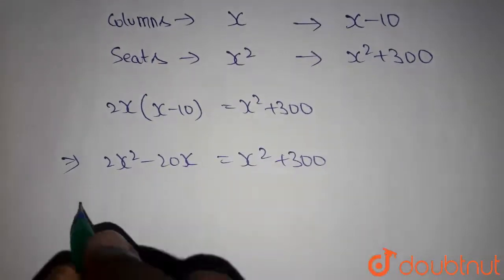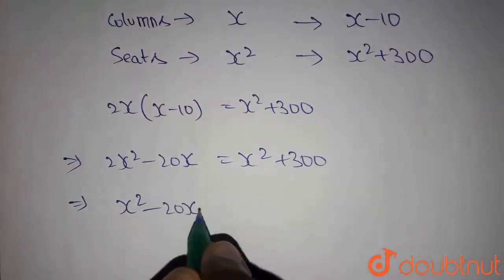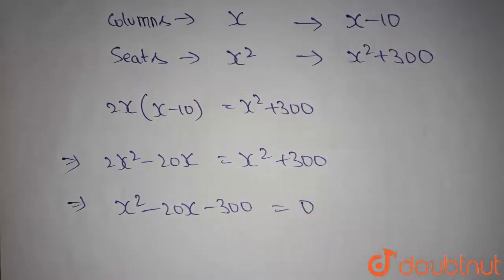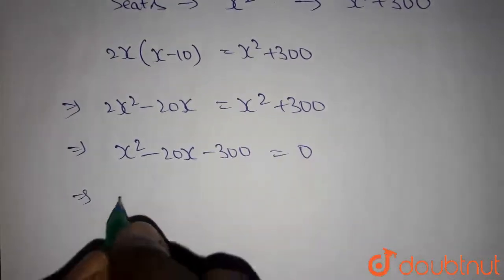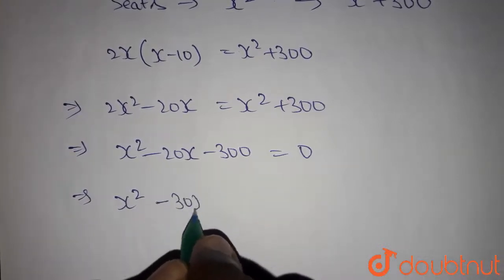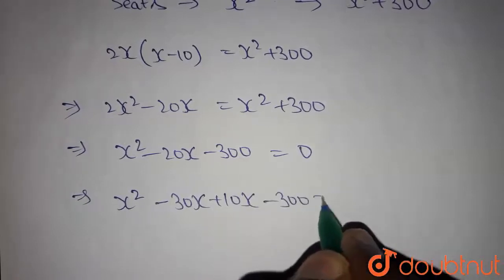If we take x square plus 300 into LHS, we get x square minus 20x minus 300 equals 0. We can write this one as x square minus 30x plus 10x minus 300 equals 0.